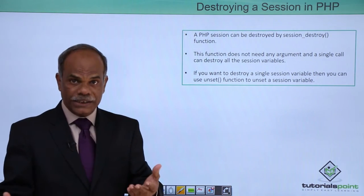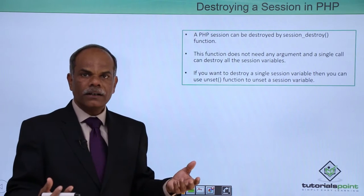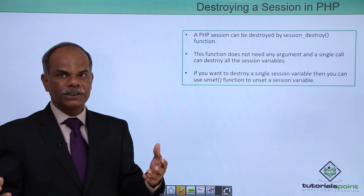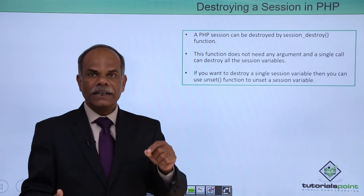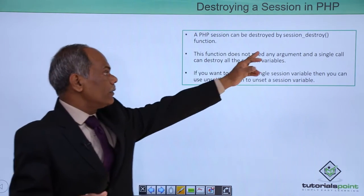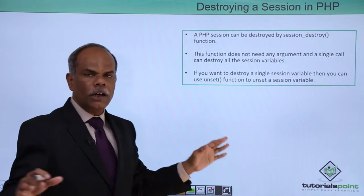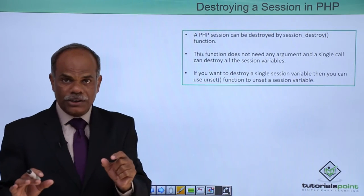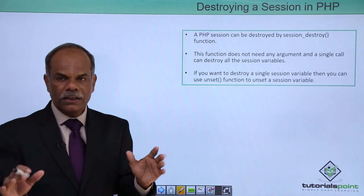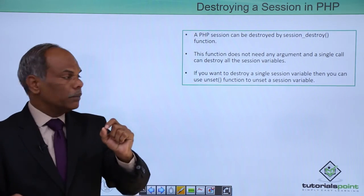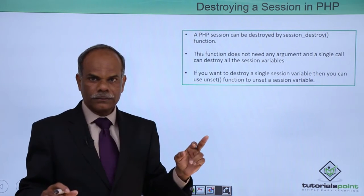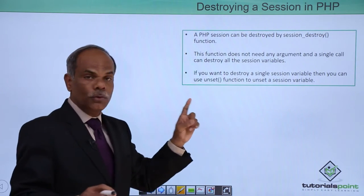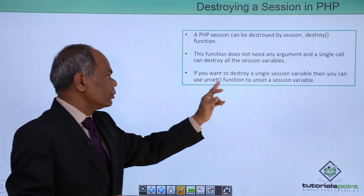To destroy a session, it will be destroyed anyway when the user logs out or the browser disconnects. But if you want to explicitly destroy the session, call the function session_destroy(). This function takes no arguments. If you want to remove only a particular session variable rather than the entire session, you can use the unset() function to remove that single variable from the $_SESSION associative array.